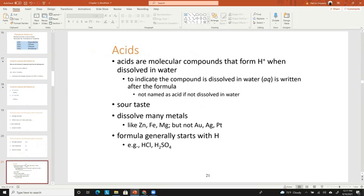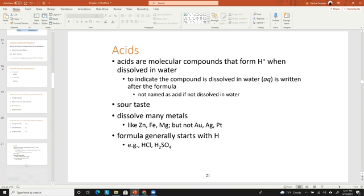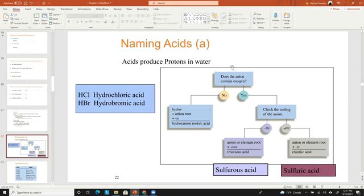For acids, acids have an H in the beginning of their formula and they dissolve in water. To name acids, first thing you need to ask is does the anion contain oxygen? If it doesn't like HCl and HBr, you will then use the hydro- prefix and then the -ic ending and then acid.